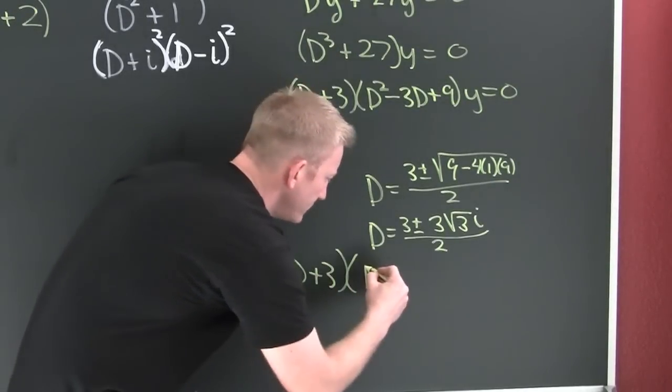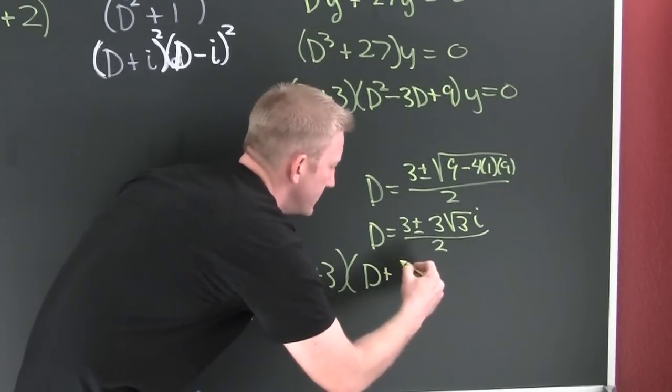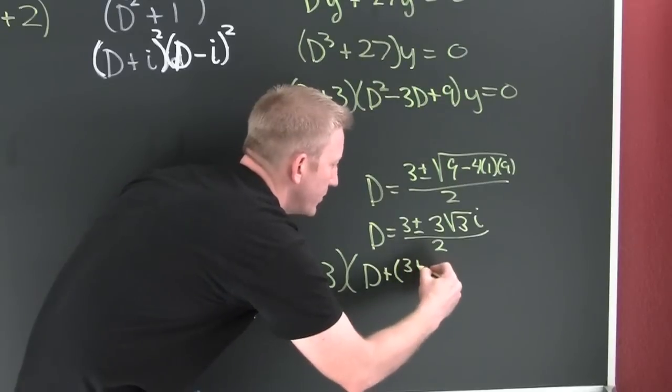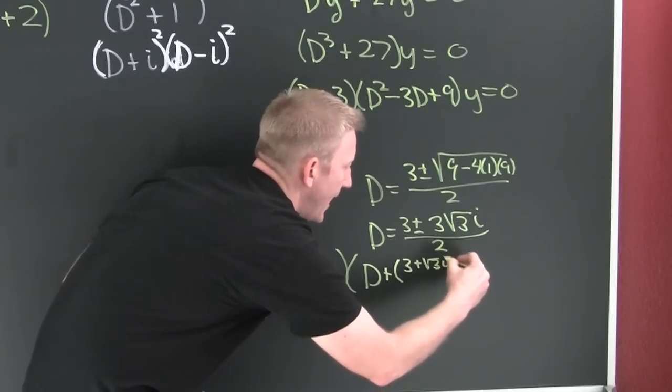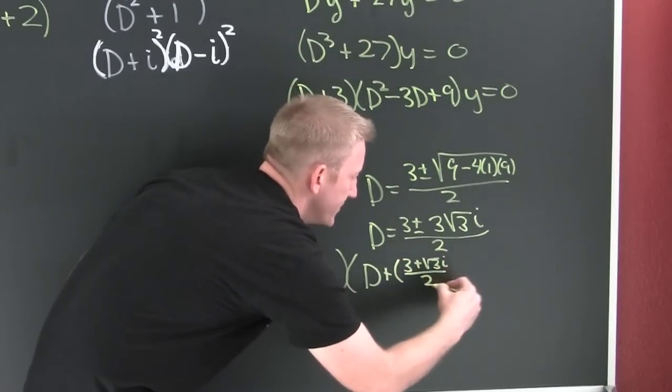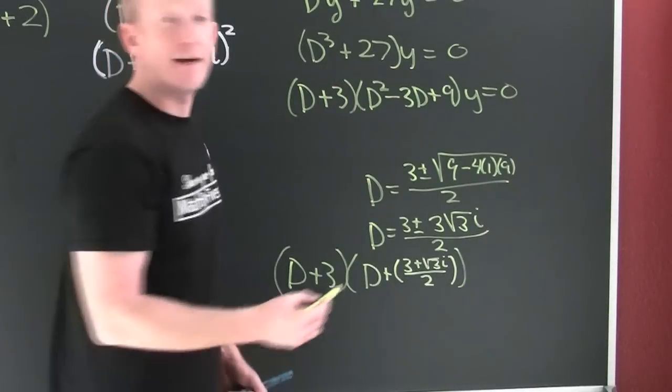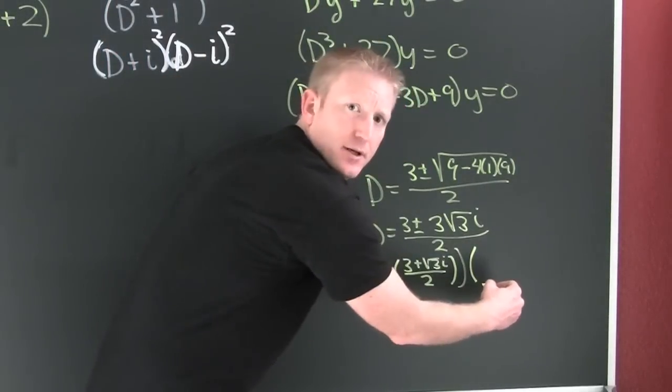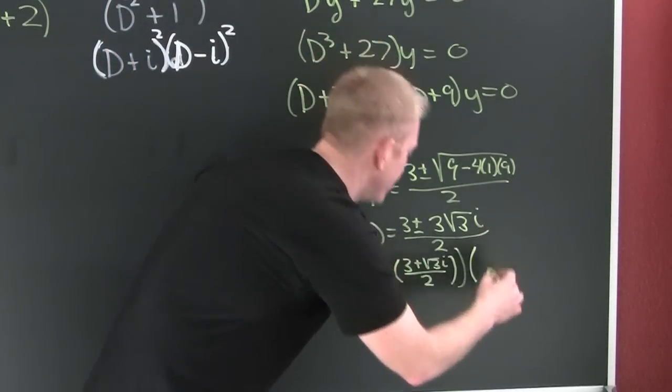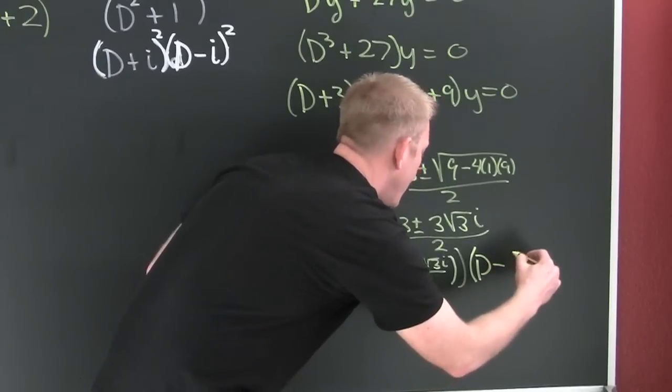This is something like D plus three, and then we're gonna have D plus three plus root three i over two, that's gonna be one factor. And then our other factor is gonna be D minus.